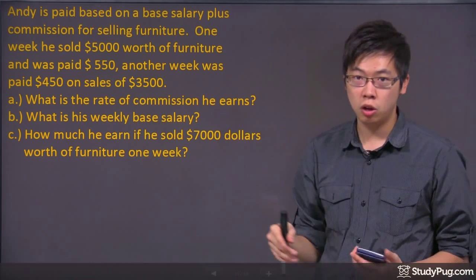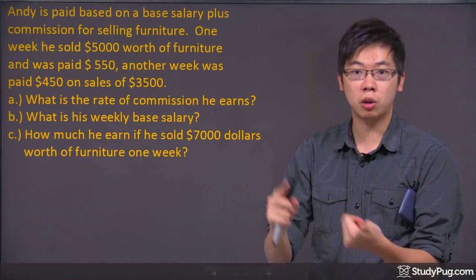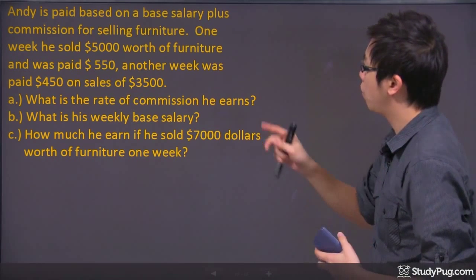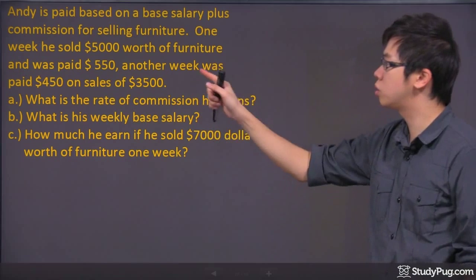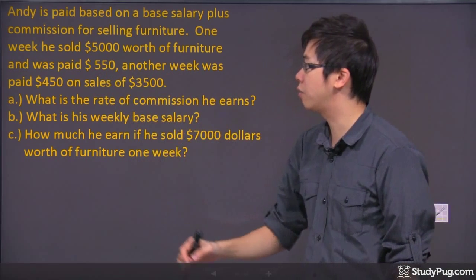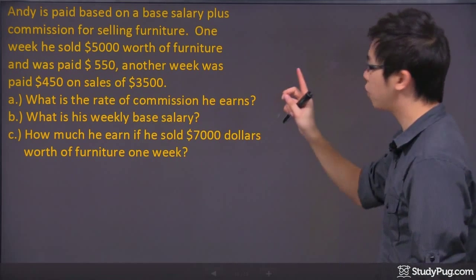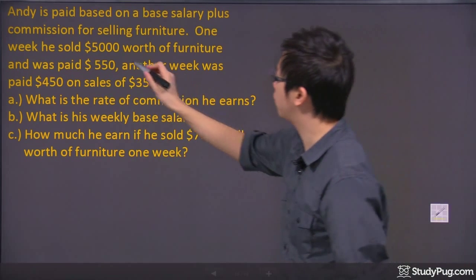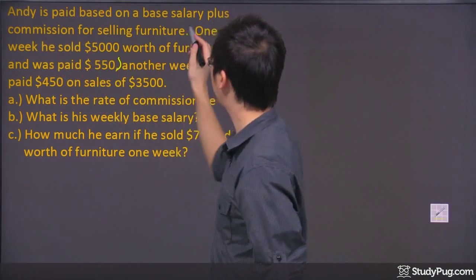Selling something, you not only get the base salary, you also get a little bit of commission. What happens in one week, he sold $5,000 worth of furniture, but he was only paid $550. For the first equation, just by reading that first sentence right there, for that week...